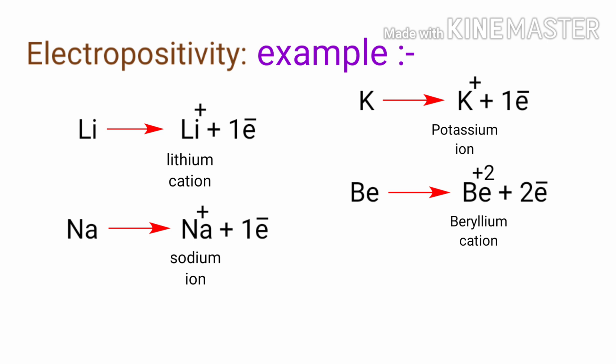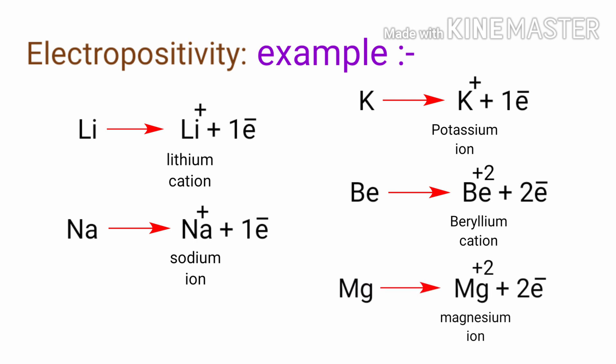Beryllium has two valence electrons; it tends to lose two electrons and form a beryllium cation. Magnesium has two valence electrons; it tends to lose two electrons and form a magnesium ion.